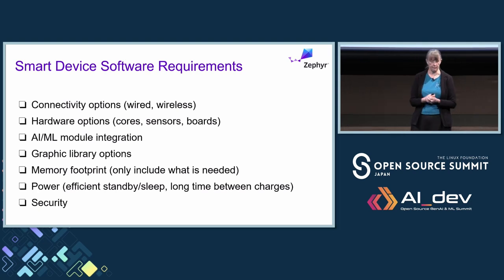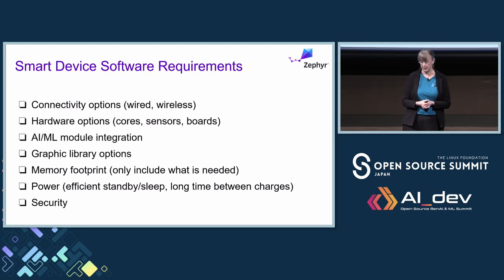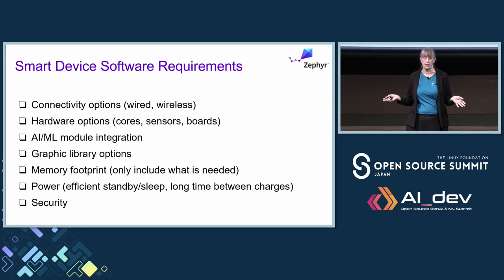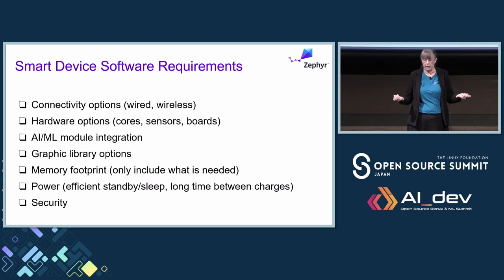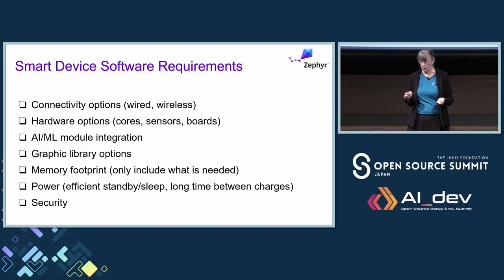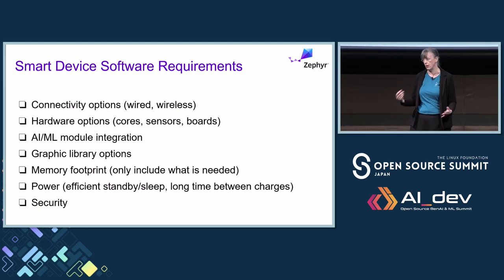Let's look at what the requirements would be to support a smart device out in the field. You might want connectivity — because with IoT, you have to talk to something usually. You may want to support a wide range of hardware for some supply chain independence. You want options for working with your AI and ML modules and models. You may want a graphical interface on some intelligent appliances. And you want the smallest memory footprint, because that takes resources and power. And obviously, we want these things to be secure — they're sending data, some of it sensitive, and we want to make sure we have a trusted path.